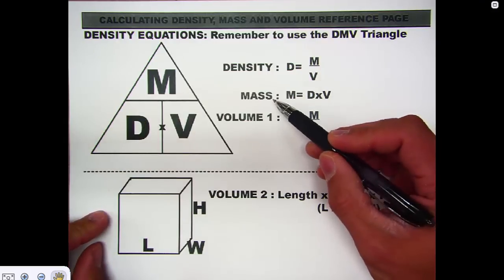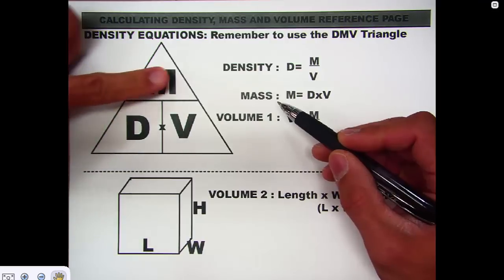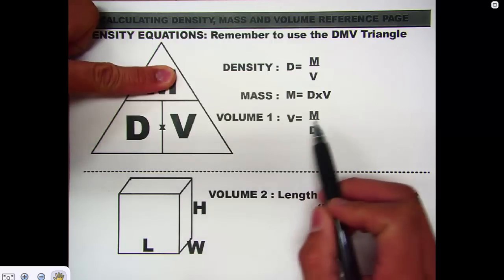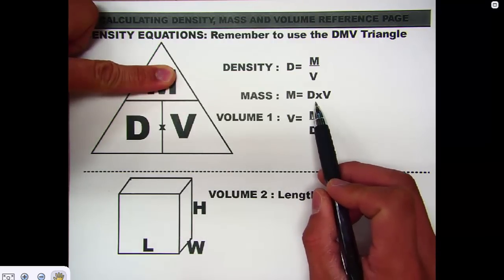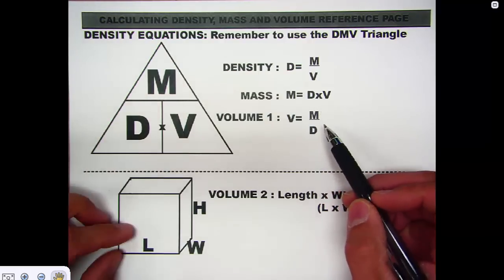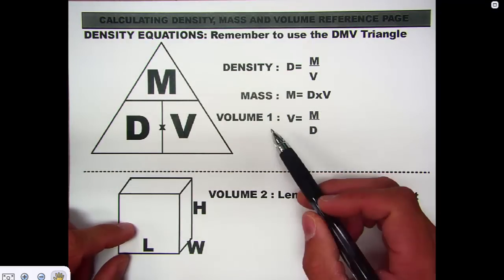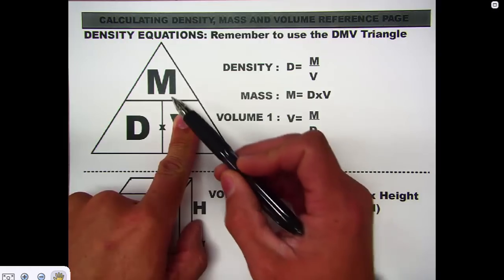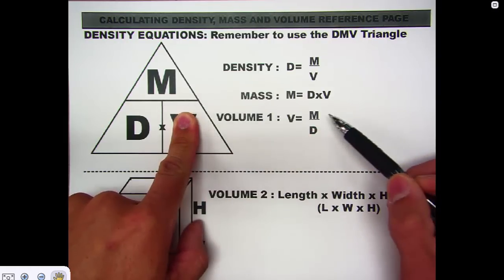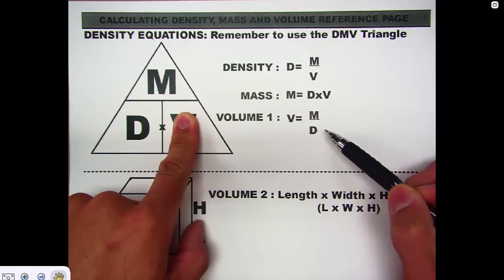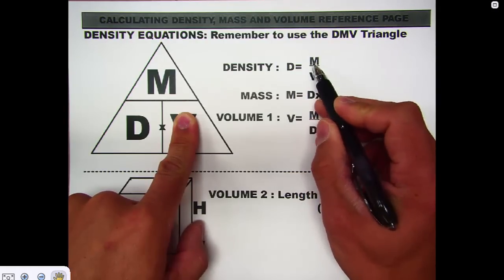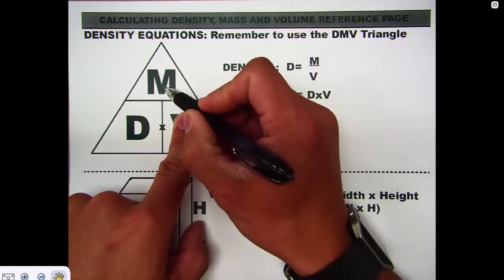If they ask you to calculate mass, cover up the M in the triangle, and you have density times volume — the exact equation for mass. Then for volume, if given mass and density, cover up the V and that gives you mass over density — mass divided by density. The reason mass goes at the top is that in both the volume and density equations, mass is always in the numerator.